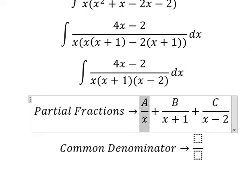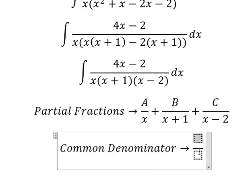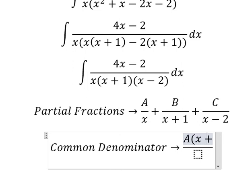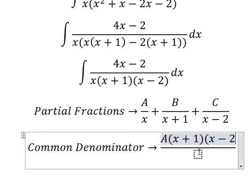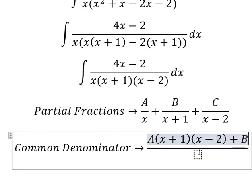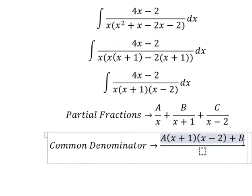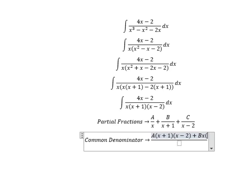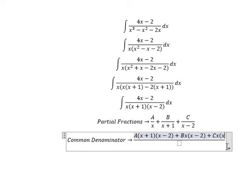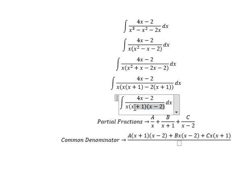For A, the missing factors are s plus one and s minus two, so capital A multiplies by s plus one times s minus two. For B, the missing factors are s and s minus two, so we multiply by s and s minus two. Similarly for capital C.